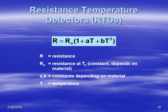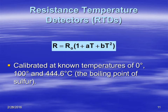Here is the calibration equation for a resistance temperature detector. An RTD shows that resistance is a function of temperature, and it's not linear — there is a squared term, so it is non-linear. R-naught is your base or constant resistance, and with temperature changes you get a change in resistance. RTDs are calibrated at known temperatures of zero, 100, and the boiling point of sulfur, which is 446.6 degrees Celsius.